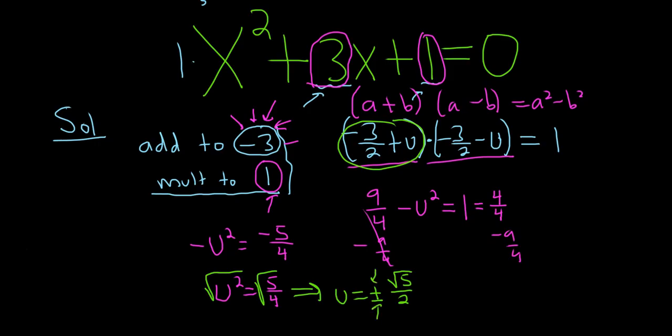So the final answer is negative 3 halves, or answers, right? There's 2 of them, negative 3 halves plus or minus the square root of 5 over 2. And that's how you do it using the method of Po-Shen-Lo.